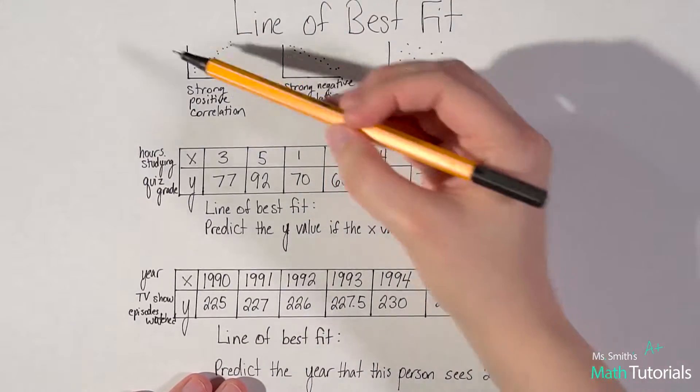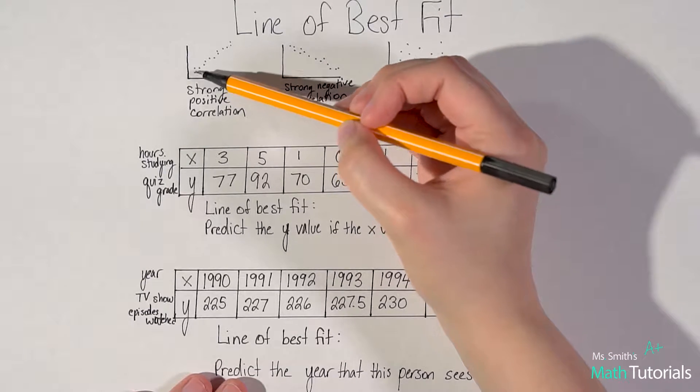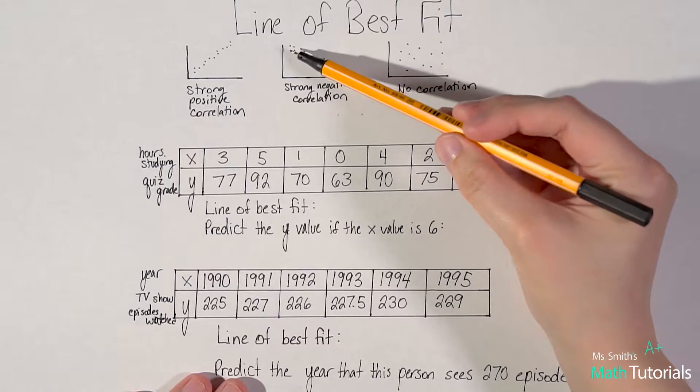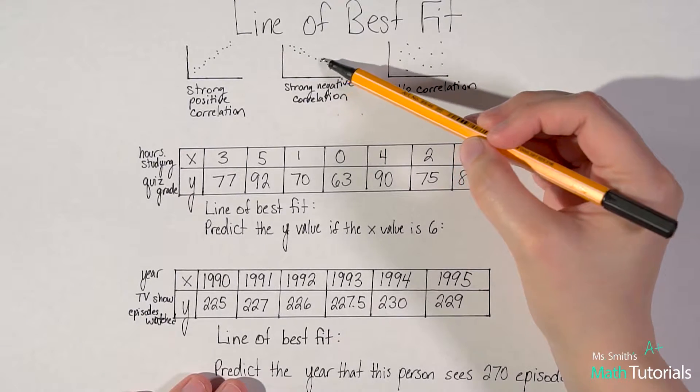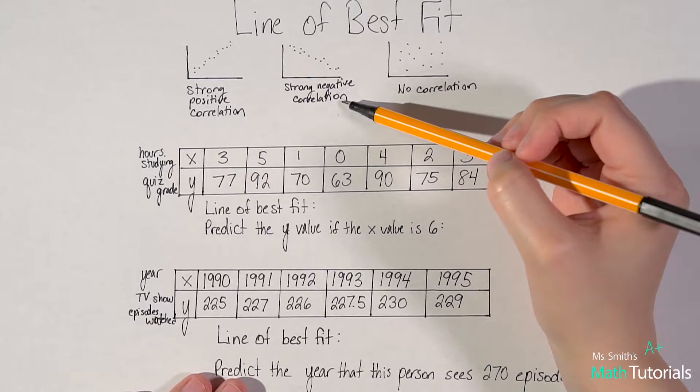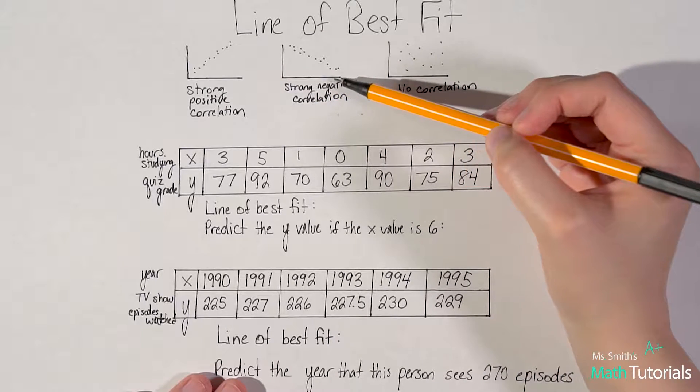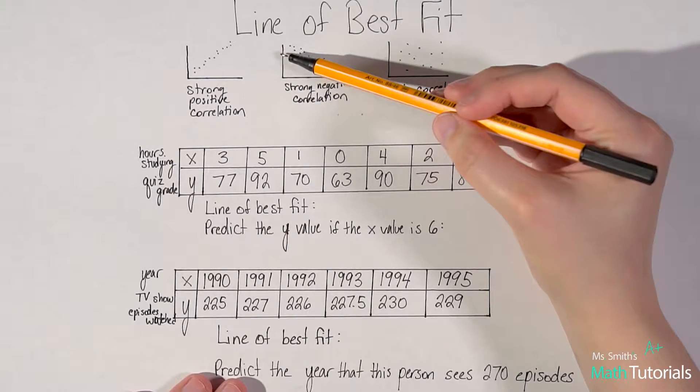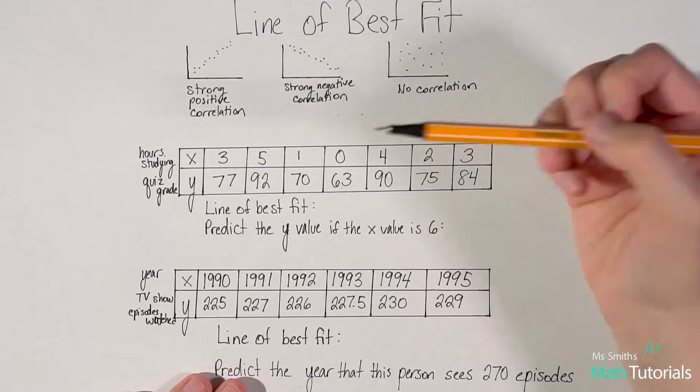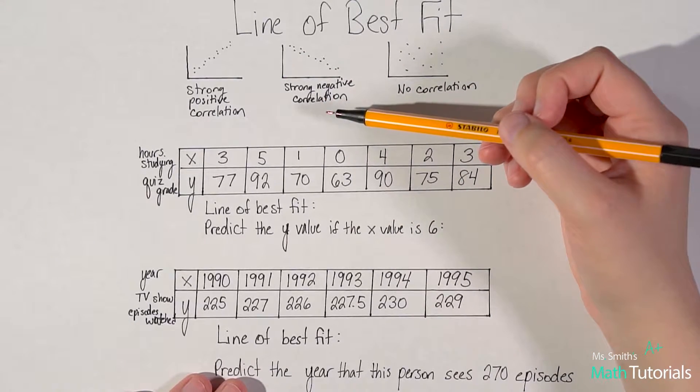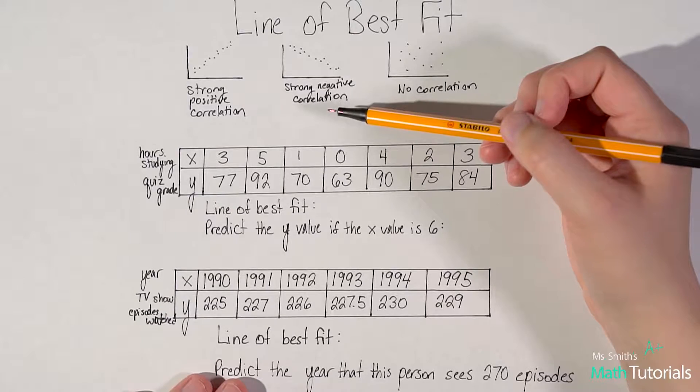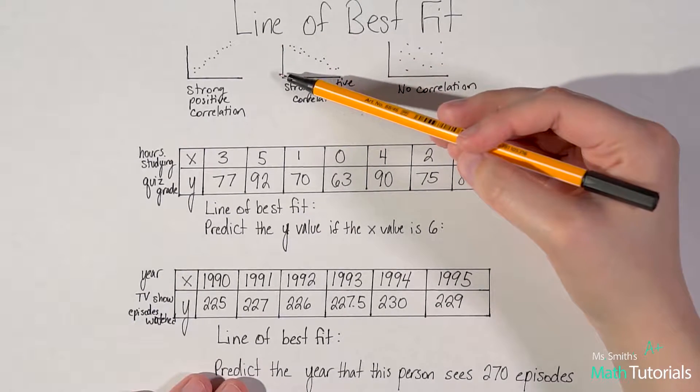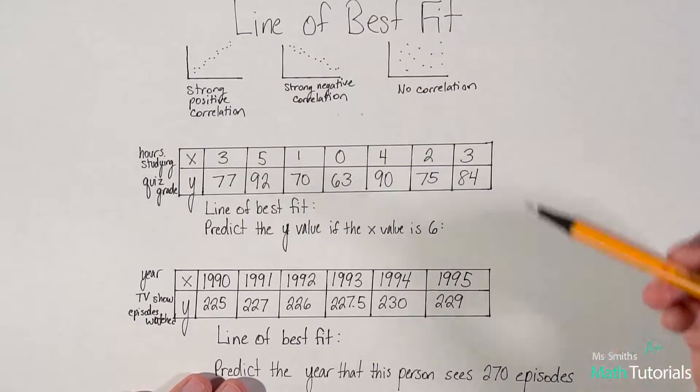We would call this a strong positive correlation. We call it positive because it's going up, it's got a positive slope. Over here, if these are all data points, this would be a strong negative correlation. Number of hours spent in class, your mental alertness will go down. If you're sitting through a six-hour lecture, as it goes on, you're going to get more and more tired as time goes on.